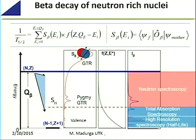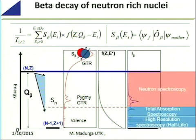If the beta decay lifetime depends on the entire range, the probability of feeding states above the neutron separation energy is the so-called neutron branching ratio — it's the probability of emitting a neutron.